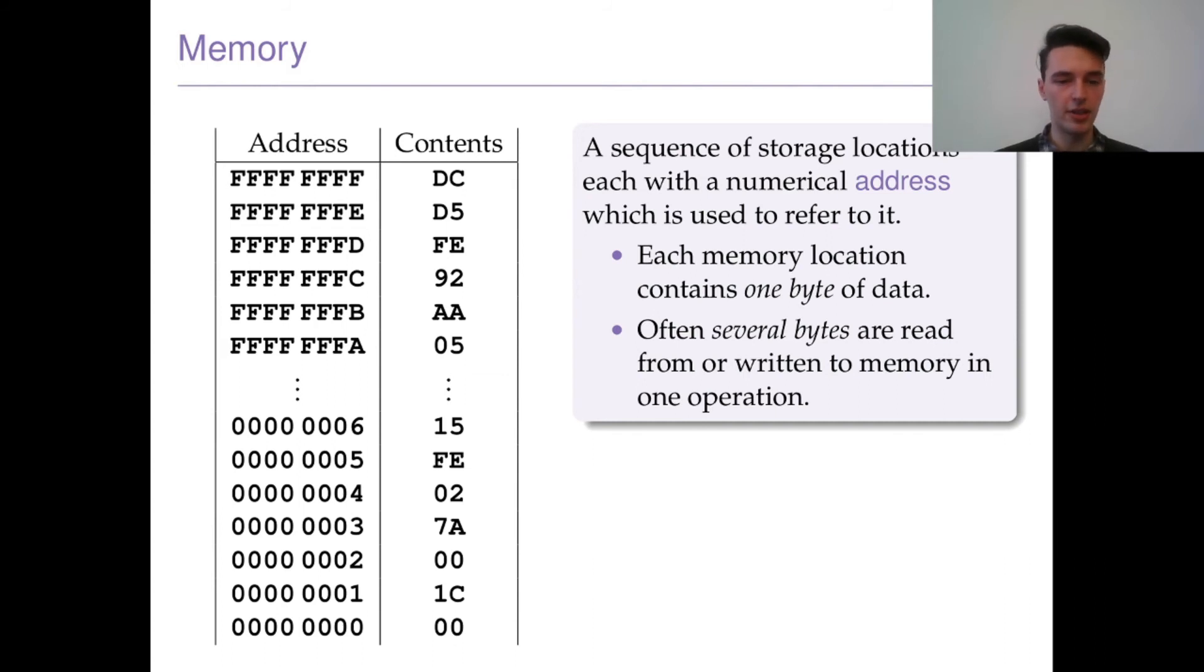As I mentioned registers, there's 2 to the 32 of them in the MIPS implementation that we're going to be looking at. You can see here on the left we've got the address column. Because it's 32-bit, each register is 32-bit. We have all the values from 0 up to FFFF, which is going to be 1111... the highest value. Each address has a sequence of bytes which represents its address.